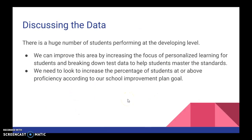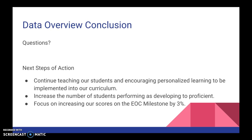By looking at the data, we can tell there's a large number of students performing at the developing level. To improve this area, we will increase the focus on personalized learning for students and break down test data to help students master the standards. We also want to increase the percentage of students at or above proficiency according to our school improvement goal plan. Next steps include encouraging personalized learning to be implemented in classrooms, pushing students from developing to proficient, and increasing our EOC Milestone scores by three percent — which is the primary goal for our math department.